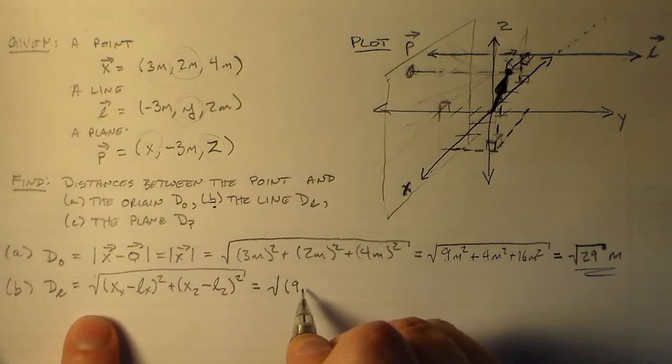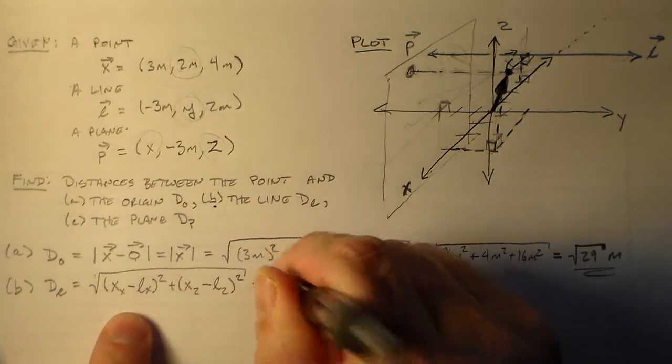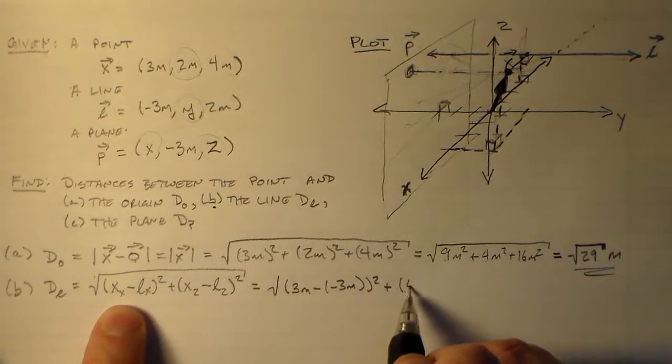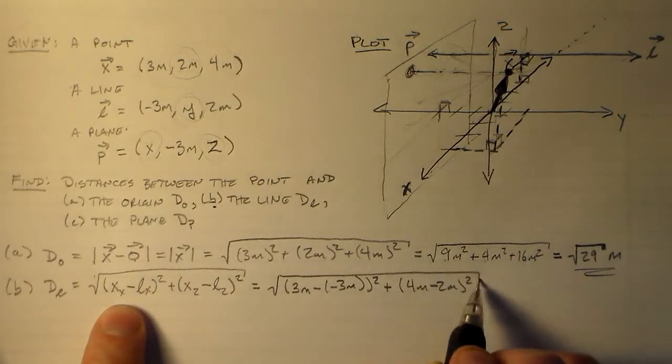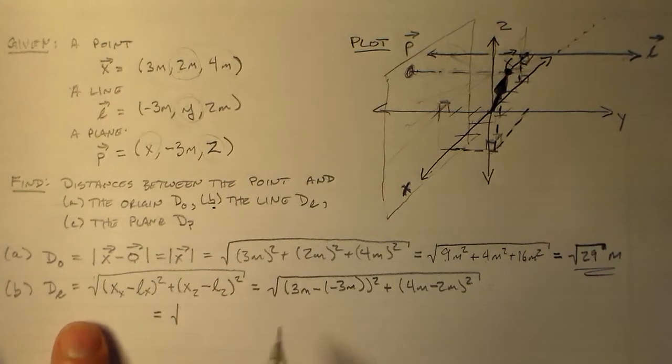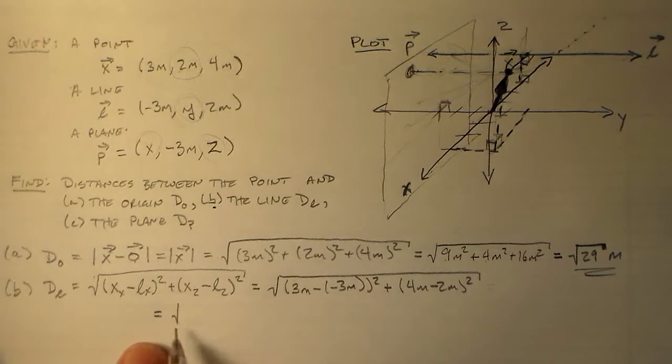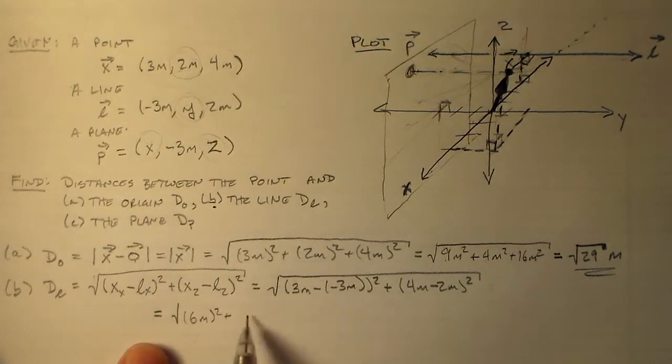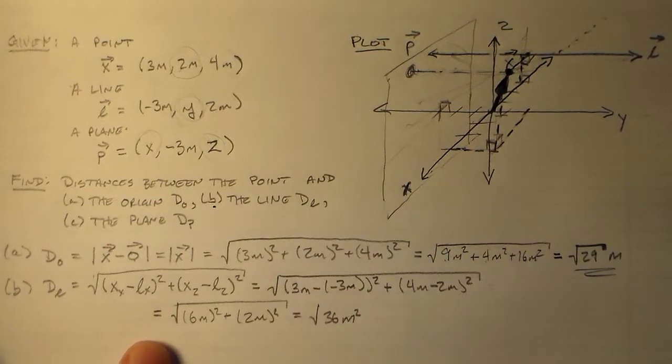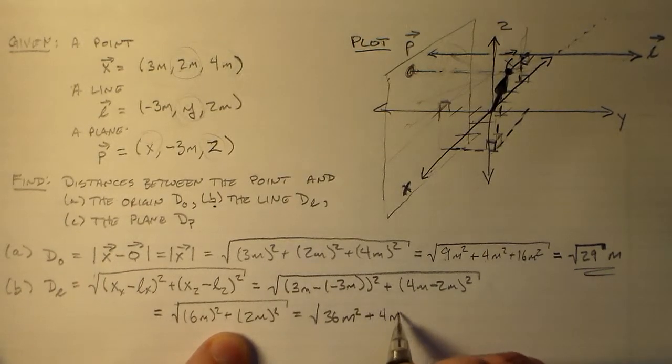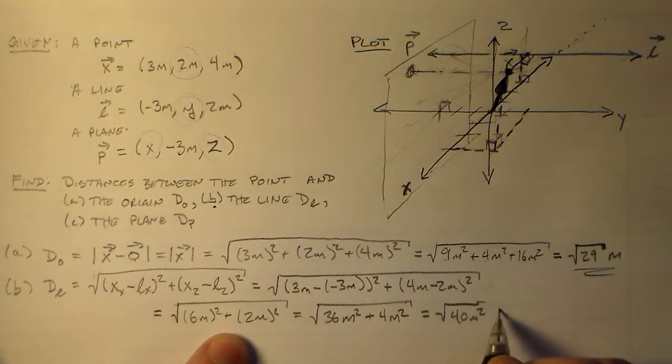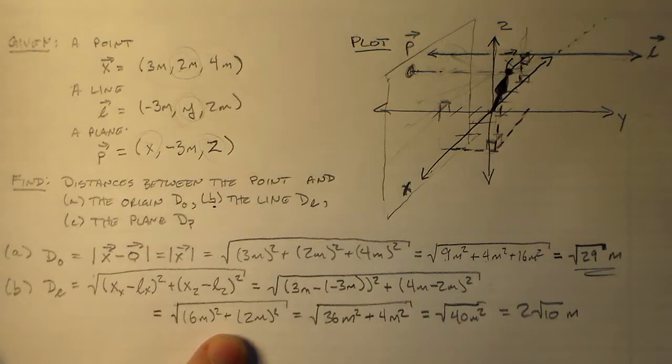But what I'm just going to do is I'm just going to say, okay, I have the difference between the x component of the x and the x component of the line, and I square that, and then I add the z component of the position vector, and I subtract that from the z component of the line, and square that, and that's going to be my distance. So that's 3 meters minus minus 3 meters squared plus 4 meters minus 2 meters squared. Then we have 6 meters squared plus 2 meters squared, and 6 meters squared is 36 square meters plus 4 square meters, which ends up being the square root of 40 meters squared. We can take out a 4, right, and turn it into a 2, so we have 2 square roots of 10 meters. Sounds pretty good to me.